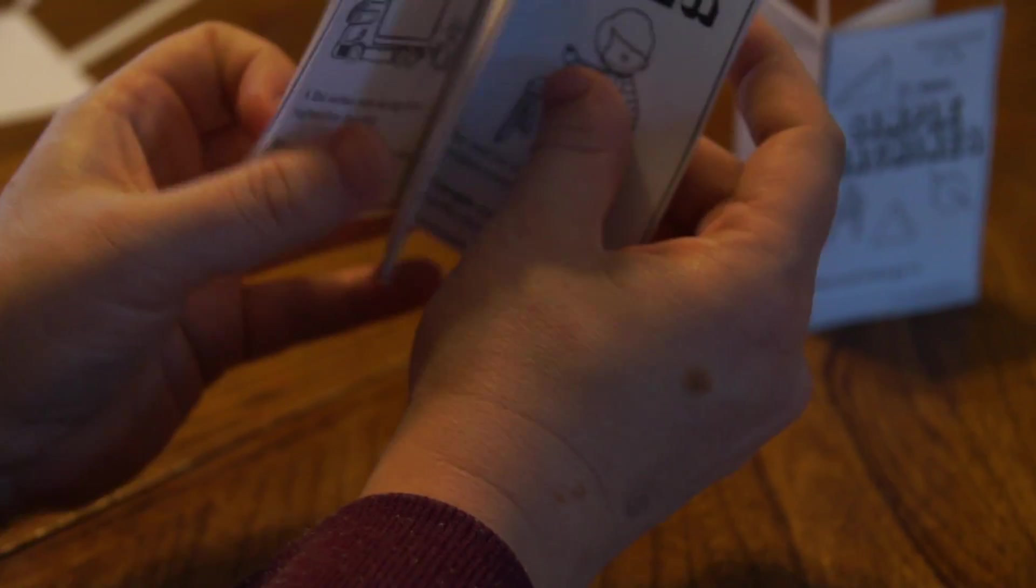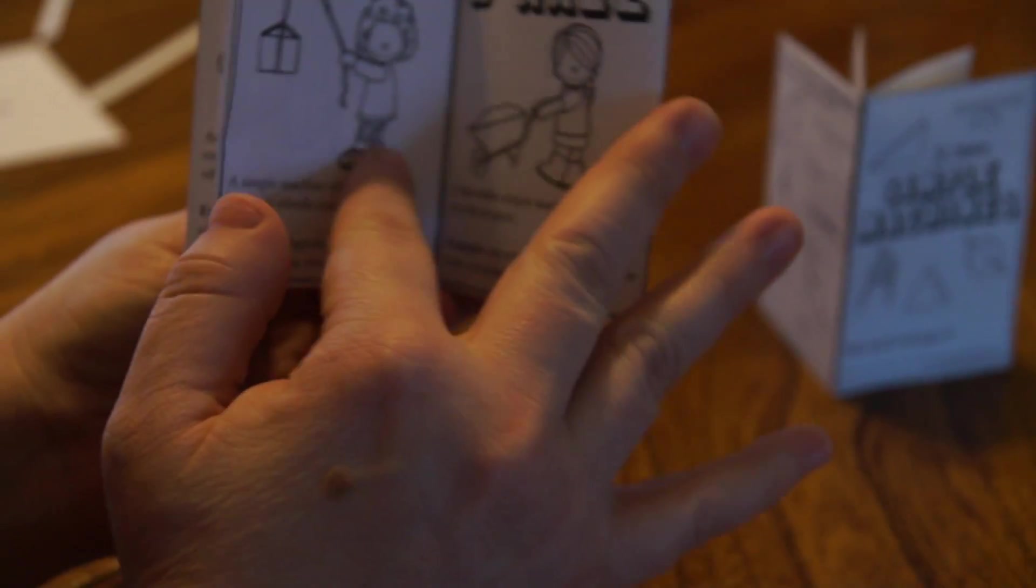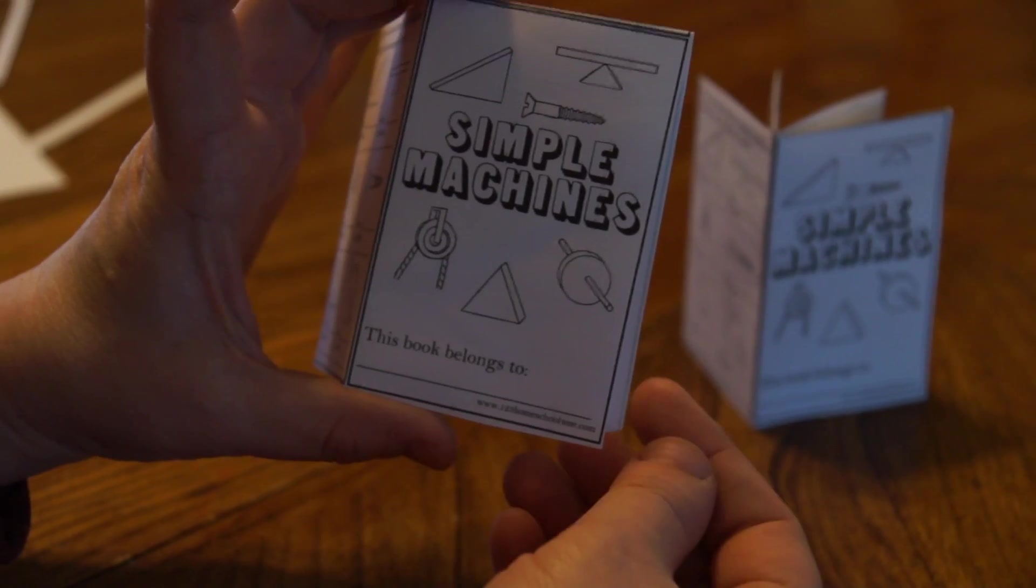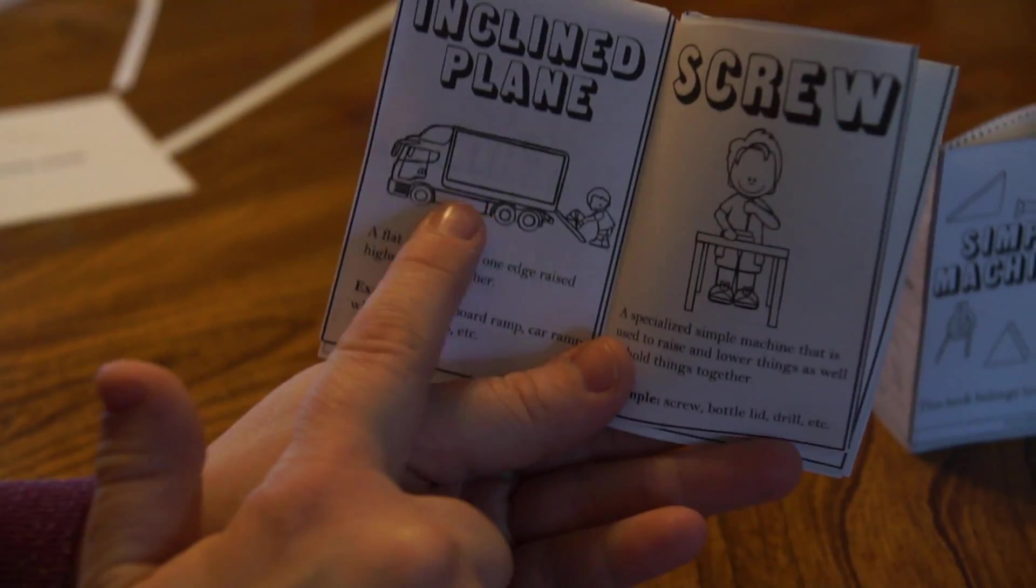And there you have it. You have a cute little book that was super easy to make because it's just one piece of paper. So there's a cover showing the six simple machines. You can put who the book belongs to, and then it starts with inclined planes.